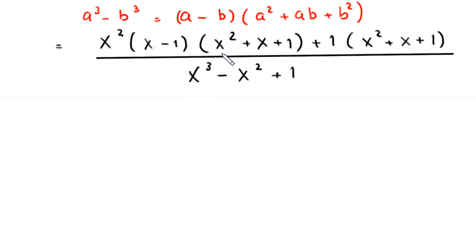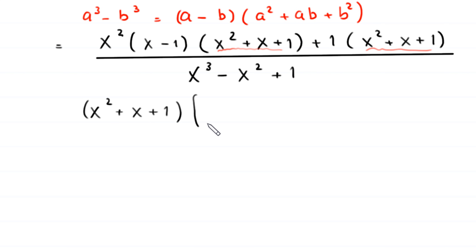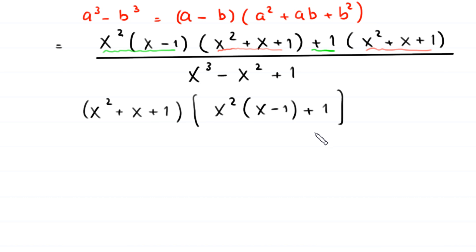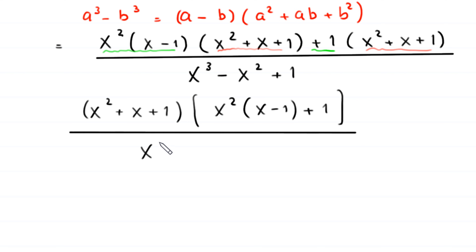Now, as you can see in the numerator, we have x squared plus x plus 1 as a common factor. So we factor out x squared plus x plus 1, leaving in the bracket x squared times x minus 1 plus 1, divided by the denominator x cubed minus x squared plus 1.